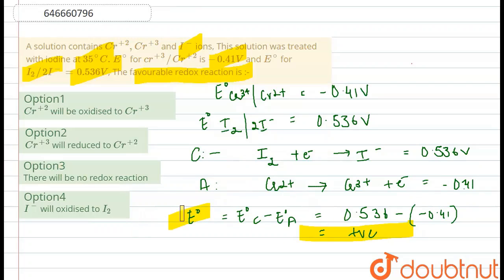Since the value is coming out to be a positive value, it means that this is a spontaneous reaction. The correct option is option number one, which is chromium 2 plus will be oxidized to chromium 3 plus. So option one is our answer.